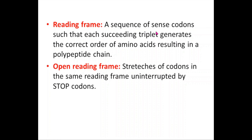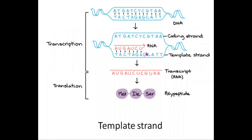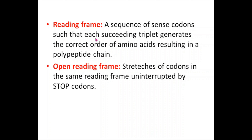A reading frame is a sequence of sense codons such that each succeeding triplet generates the correct order of amino acids, resulting in a polypeptide chain. An open reading frame (ORF) is similar but with a key difference: it is a stretch of codons in the same reading frame uninterrupted by stop codons. There is a small but important difference between a reading frame and an open reading frame.